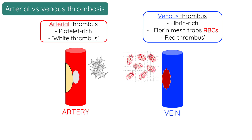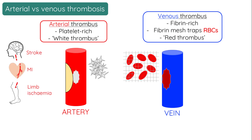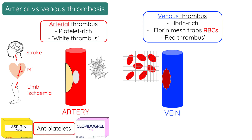Because these two types of thrombi are composed of largely different materials, the drugs we use to treat them differ. Myocardial infarction, ischemic stroke, and peripheral arterial disease are examples of atherothrombotic disease, and so the clots that cause these diseases are made up mainly of platelets, and so antiplatelets are found to be the most effective treatment in preventing these diseases.